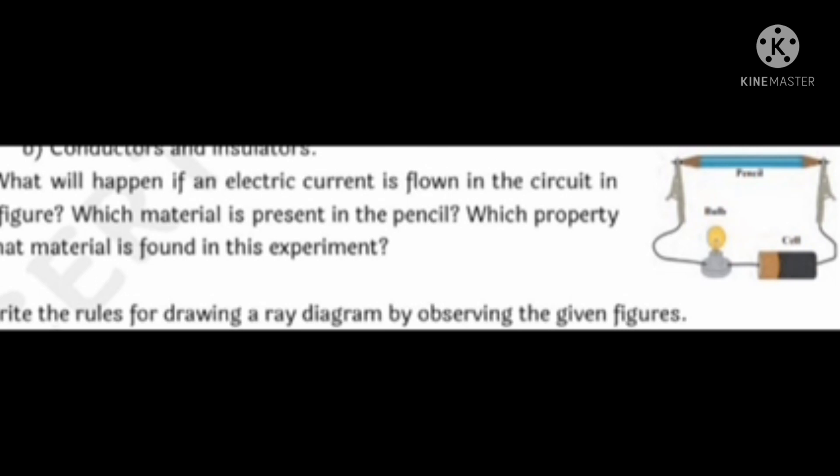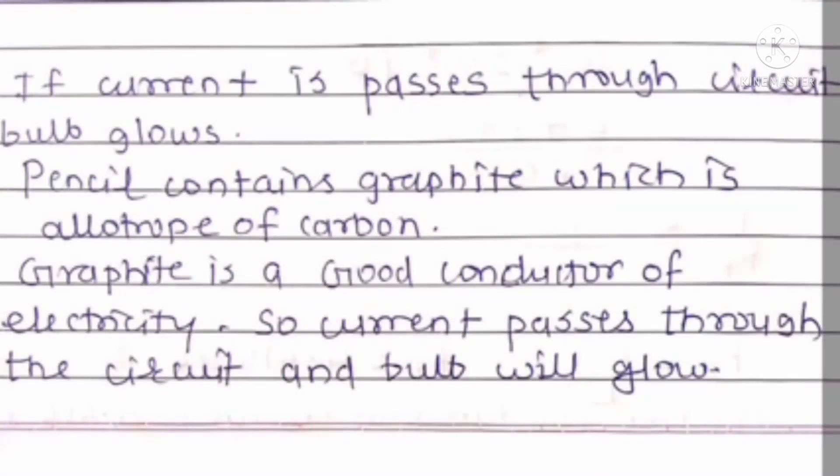Question number 6: What will happen if an electric current is flown in the circuit in the figure? Which material is present in the pencil? Which property of the material is found in this experiment? Answer: If current passes through the circuit, bulb glows. Pencil contains graphite which is allotrope of carbon. Graphite is a good conductor of electricity and so current passes through the circuit and bulb will glow.